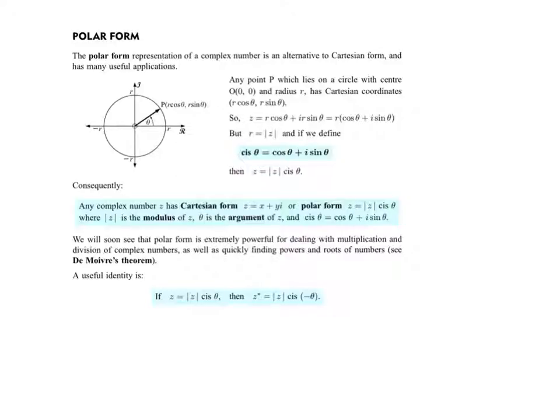If you remember, if this is a plus bi, then a minus bi would be just a reflection over the real axis. So what that has done is instead of having a positive theta this way, you now have a negative theta. So they're showing you here that the conjugate in polar form is going to be the modulus of z, cis negative theta.